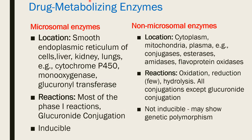Drug metabolizing enzymes are of two types: microsomal enzymes and non-microsomal enzymes. Microsomal enzymes are located at the smooth endoplasmic reticulum of cells in organs like the liver, kidney, and lungs. Examples are cytochrome P450, mono-oxygenase, and glucuronyl transferase. The reactions are mostly Phase 1 reactions and glucuronide conjugation. These enzymes are inducible, which affects the metabolism of drugs.